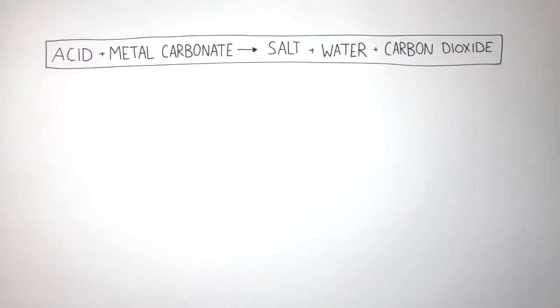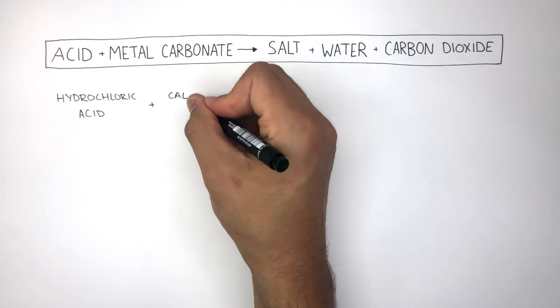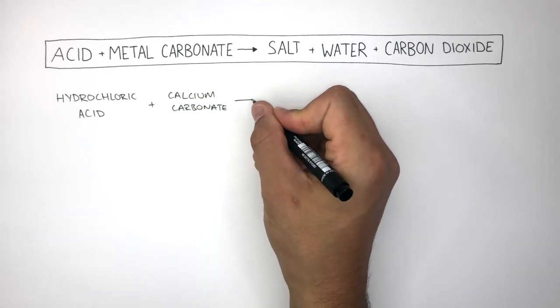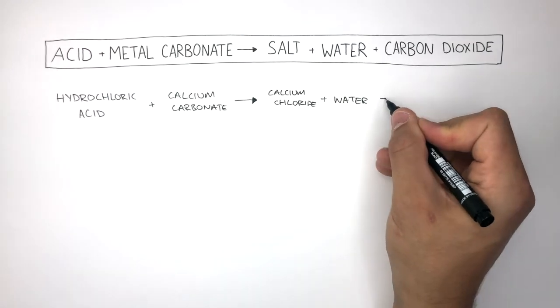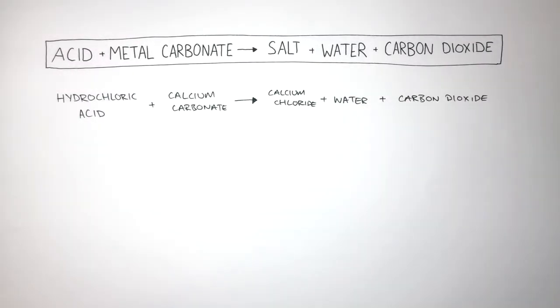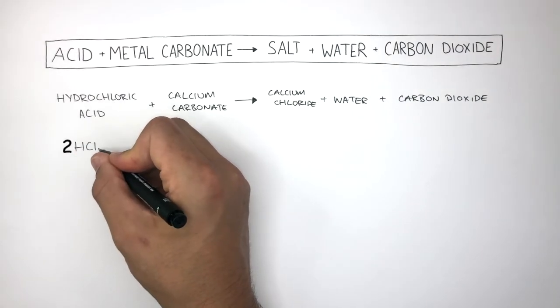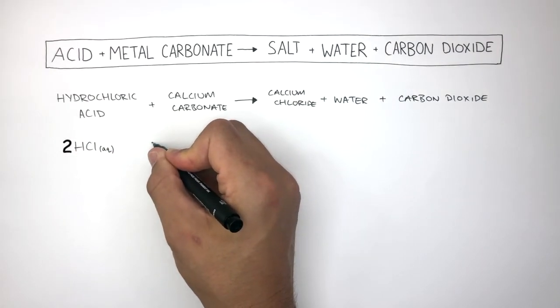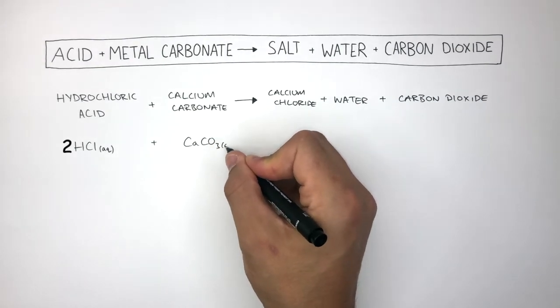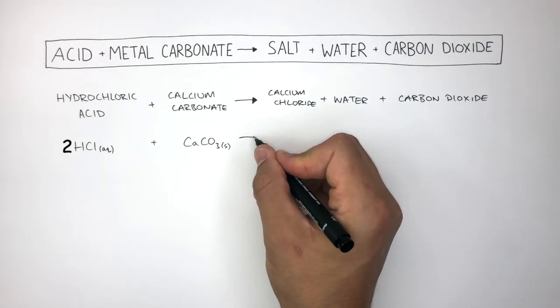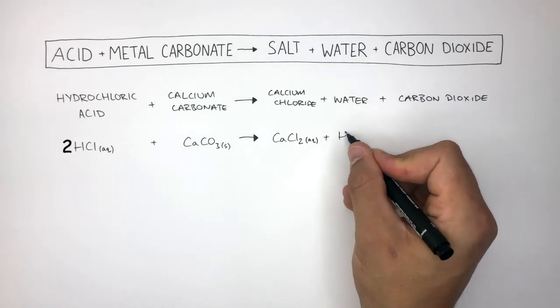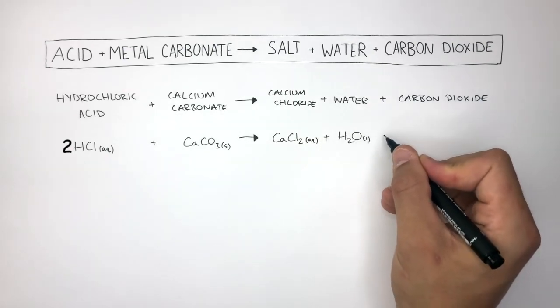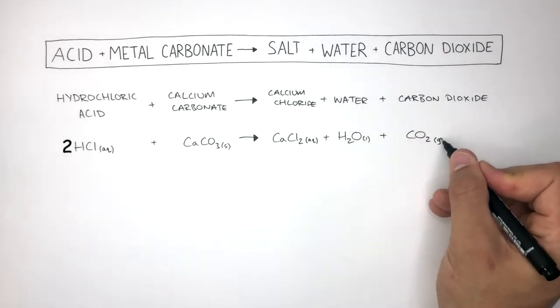An example of this is hydrochloric acid plus calcium carbonate reacts to form calcium chloride plus water plus carbon dioxide. The balanced symbol equation for this reaction is 2HCl(aq) plus CaCO3(s) reacts to form CaCl2(aq) plus H2O(l) plus CO2(g).